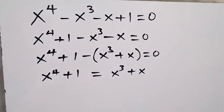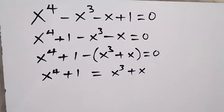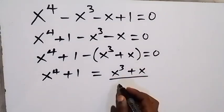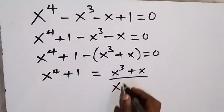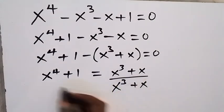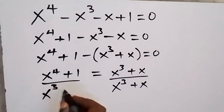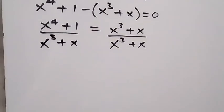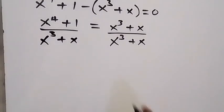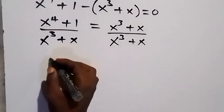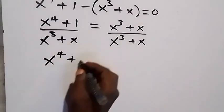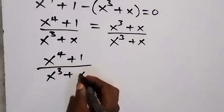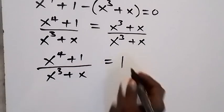The next step: let's divide both sides by x raised to power 3 plus x, so as to make this side equal to 1. So we have x raised to power 3 plus x divided by x raised to power 3 plus x, and this equation will be reduced. On the right-hand side we are going to have 1, and we can write this as x raised to power 4 plus 1 divided by x raised to power 3 plus x equals 1.